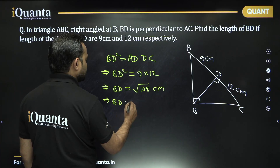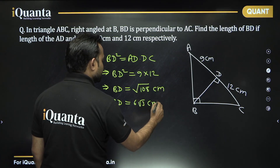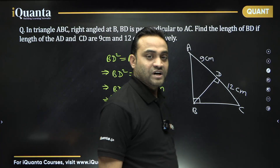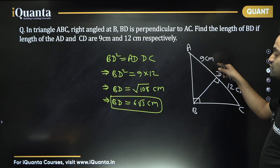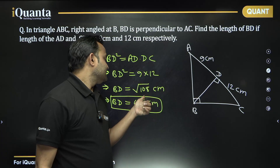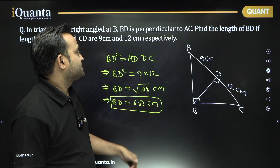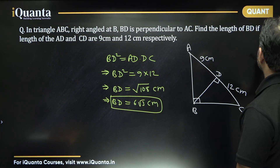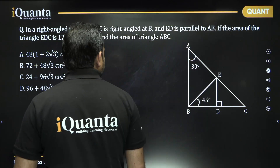BD can be written as 6 root 3 centimeters. That is our answer. Since 9 into 12 is 108, and 108 is 36 into 3, the square root of 36 is 6, so BD equals 6 root 3 centimeters.